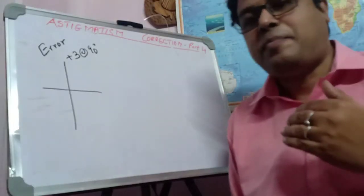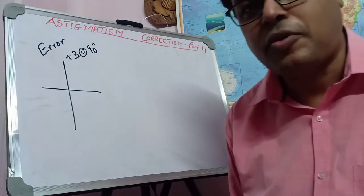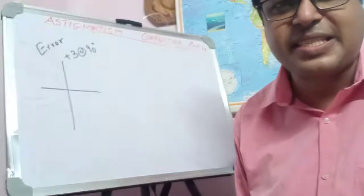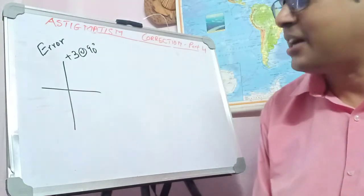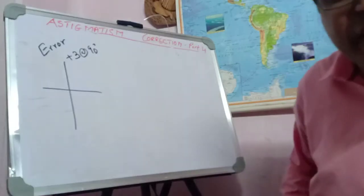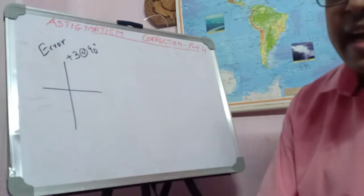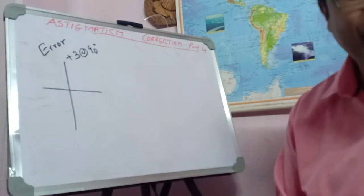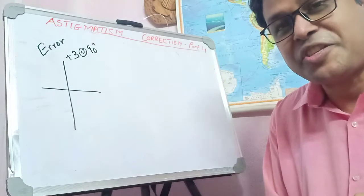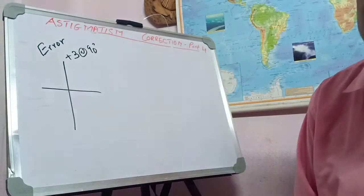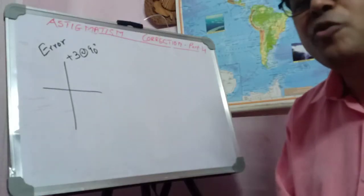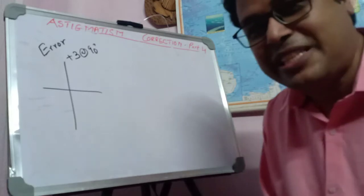In part 4 of this series on astigmatism, we are going to focus on astigmatism correction with glasses. In part 3, we also focused on astigmatism correction with glasses. What we are going to do here is take more examples and be more familiar with the concept.